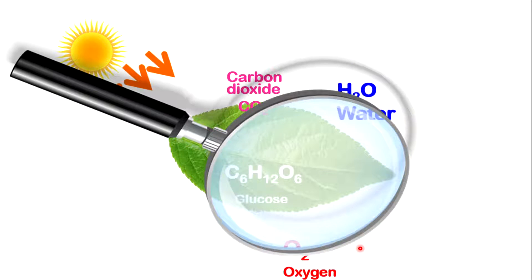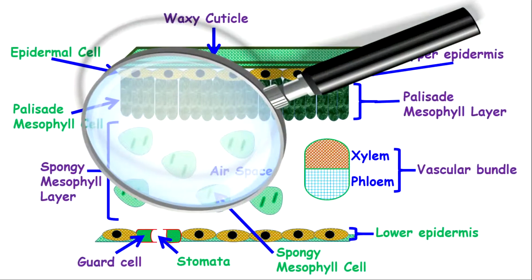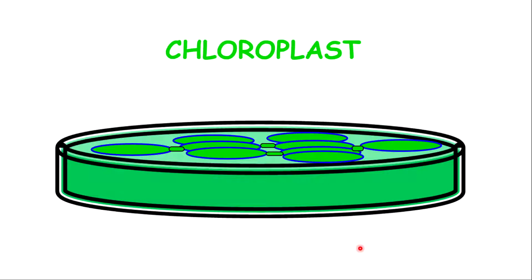If you zoom into a leaf, you'll find some photosynthetic cells. These photosynthetic cells are particularly named palisade mesophyll cells and spongy mesophyll cells. If you go further into these cells, you will find an organelle known as chloroplast, and chloroplast is where photosynthesis actually takes place. Inside chloroplast, you have a pigment known as chlorophyll, which is a green pigment responsible for absorbing light.